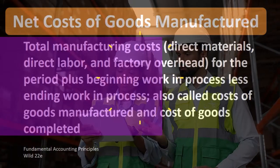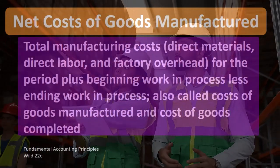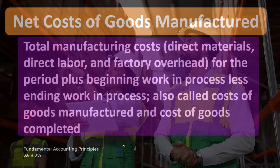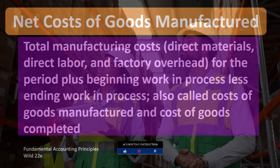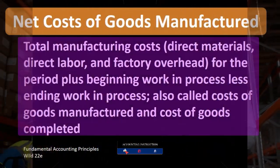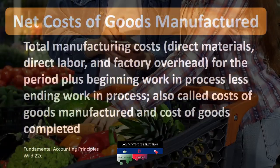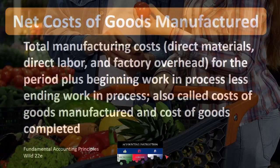For the period, plus beginning work in process, less ending work in process — also called cost of goods manufactured and costs of goods completed.